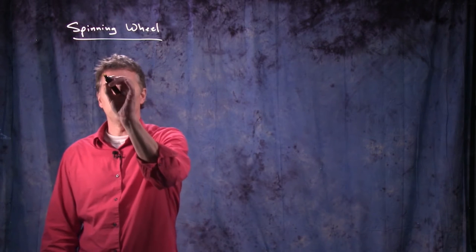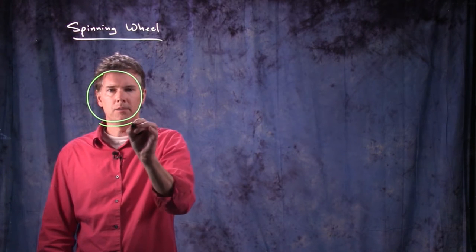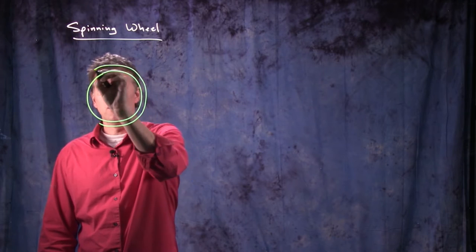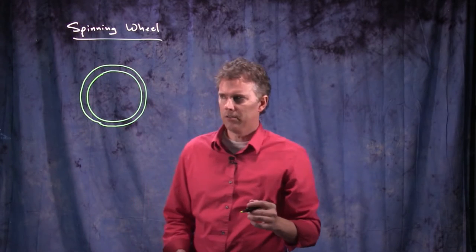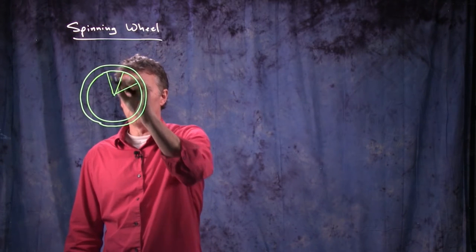So what does a wheel look like? A wheel looks like this. You've got an inner radius, a very close outer radius, and then you have some spokes that are going out to the wheel.